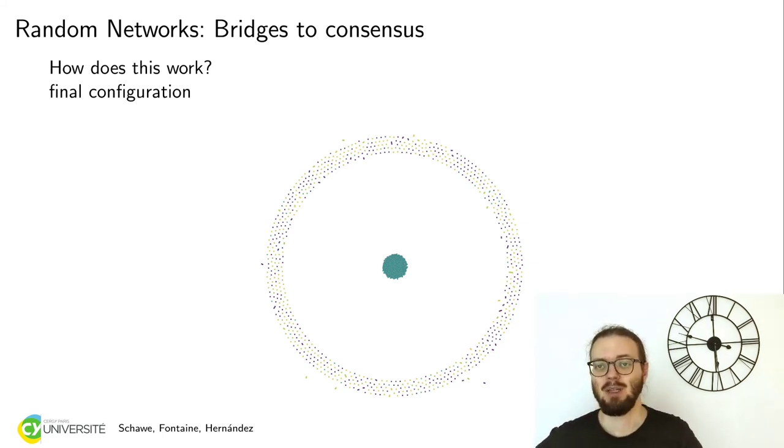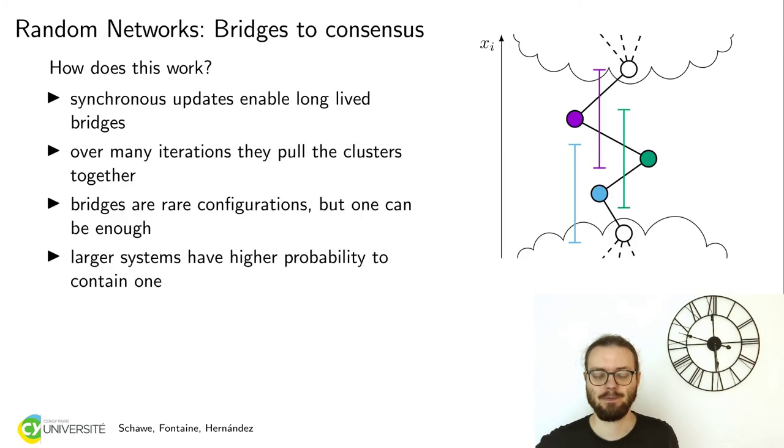Can we now understand why this mechanism always leads to consensus? Yes. A bridge is just a configuration of agents which are within each other's confidence and which are not connected too strongly to one of those blobs. Otherwise, they would be directly absorbed into a blob and the bridge would be broken. But the synchronous update of the model will preserve those bridges.